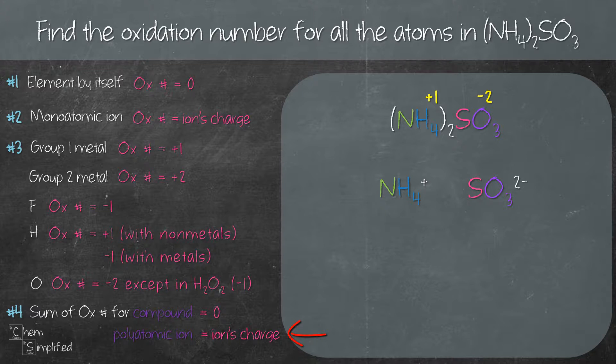The sum of oxidation number for polyatomic ion equals the ion's charge. Now if we use X to represent the oxidation number of N because we don't know what the oxidation number is, we're trying to find out, so we'll just use X to represent it. So X plus 4 times plus 1 equals plus 1.